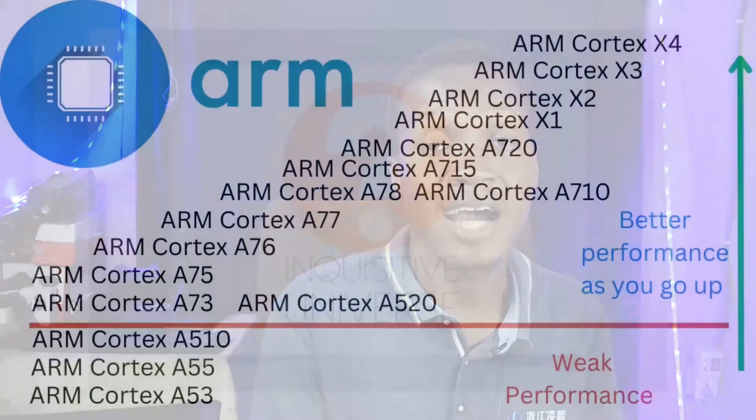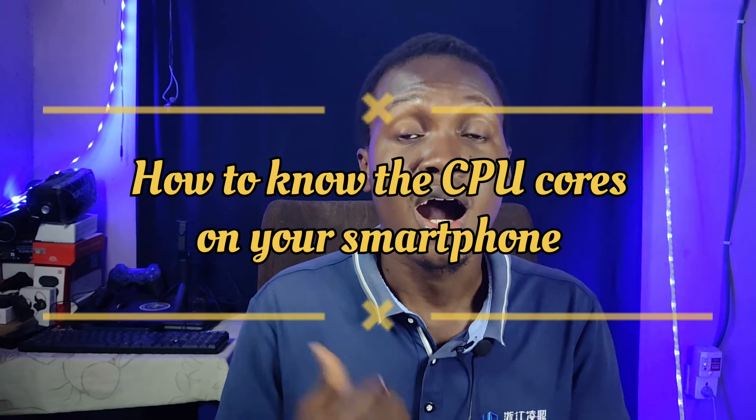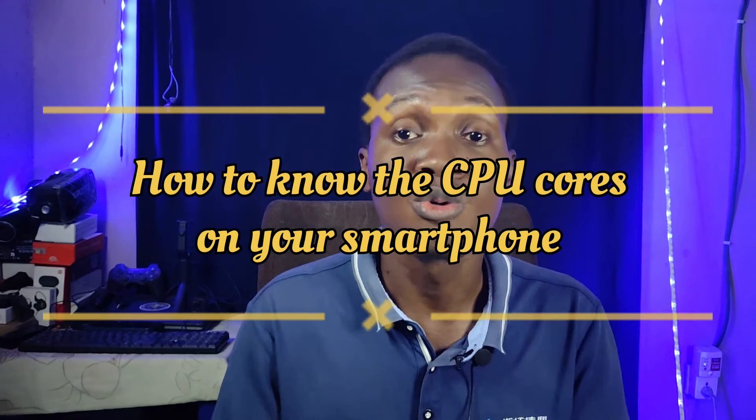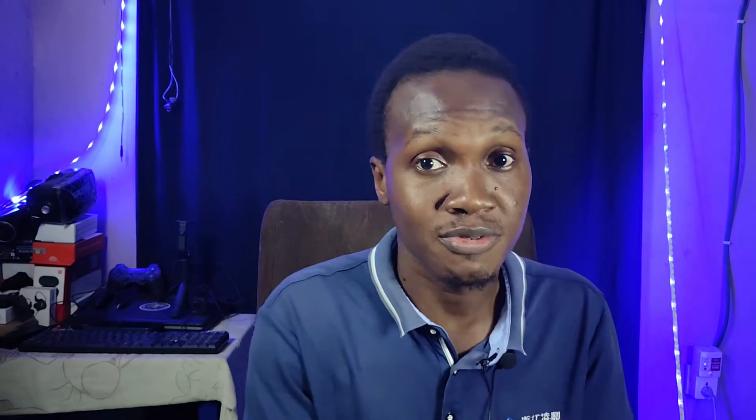There are many types of CPU cores, and they've evolved over the years with different types of performance. We'll set that aside first and answer the main question: how do you know the CPU cores on your smartphone? It's actually very simple.